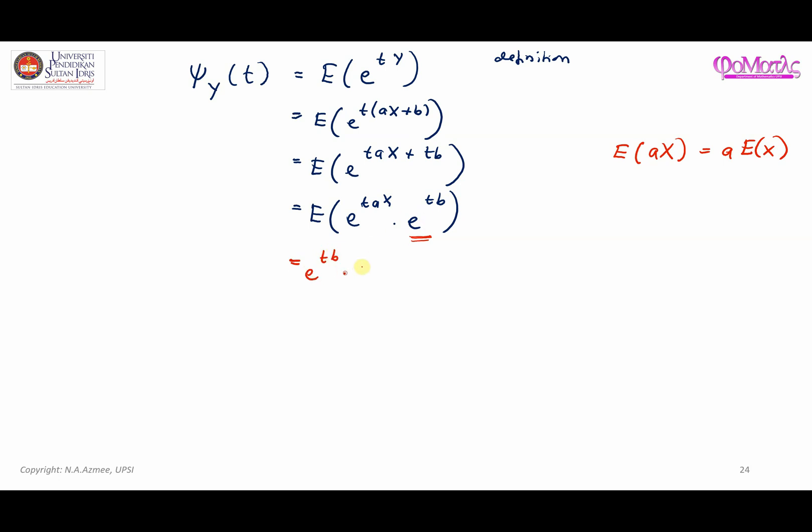Therefore, the constant here can be taken out. And we have expected value of e^taX. Now, for the next part, we are going to use the definition. From the definition, we know that if I have E(e^tX), this is representing the mgf for our random variable X, and here depends on t. Therefore, if I have E(e^atX), then this is going to be the mgf of X where the function will depend on at.